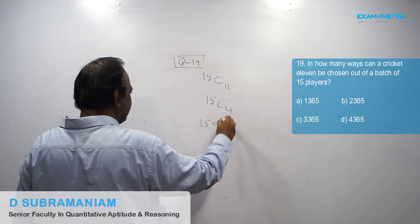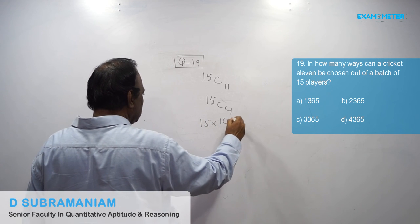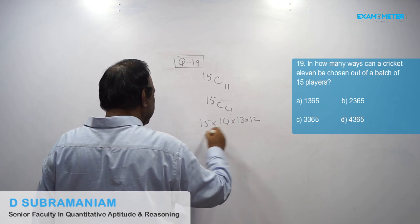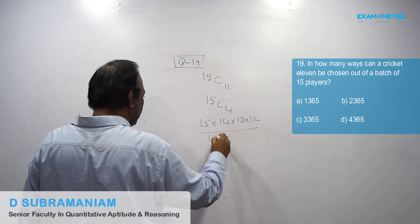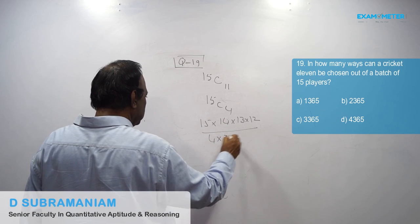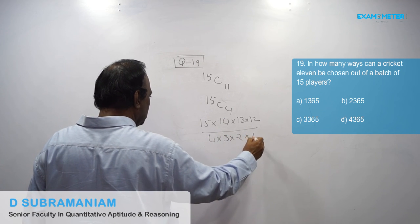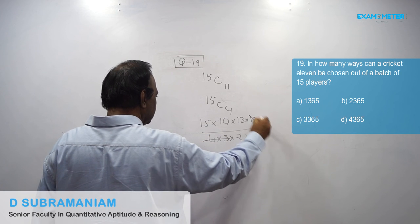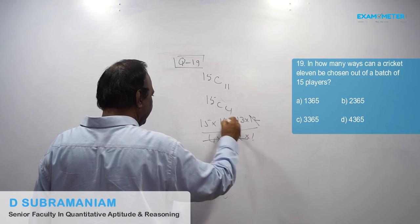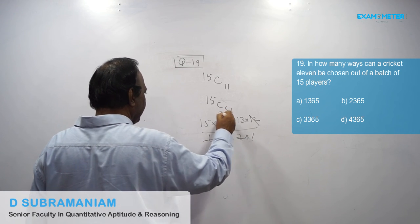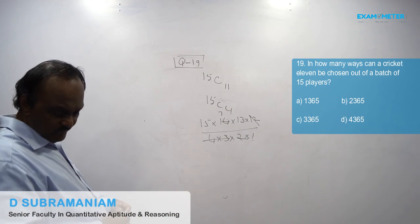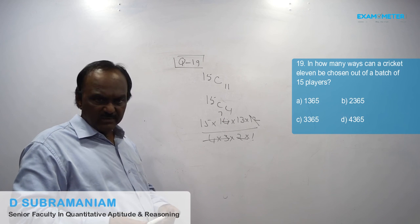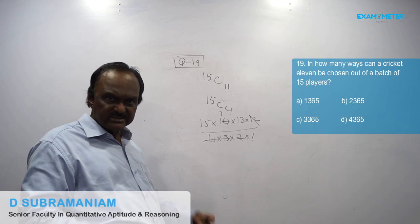15C4 equals fifteen into fourteen into thirteen into twelve by four into three into two into one, which comes to 1365. So the answer is A.